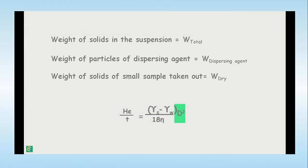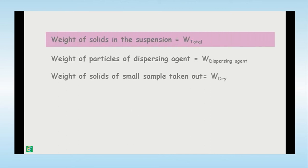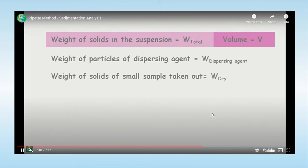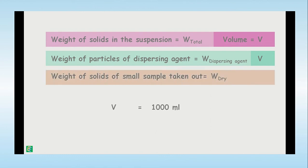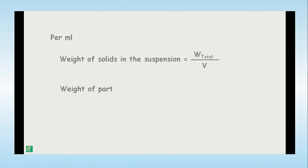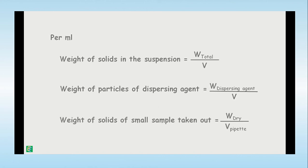Using the formula h/t, we find V, the settling velocity of the particles. The total volume is taken as 1000 ml, so V equals 1000 ml. The volume occupied by the dispersing agent is accounted for using V_pipette. In this case, the total volume is 1000 ml and the pipette volume is 10 ml.